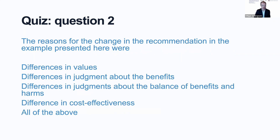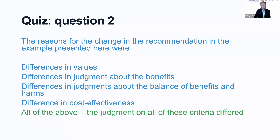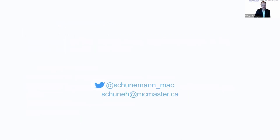Question two: the reason for the change in the recommendation in the example presented here were differences in values, differences in judgments about the benefits, differences in judgments about the balance of benefits and harms, differences in cost-effectiveness, or all of the above? Actually, all of the above. The judgments in this hypothetical example differed on all of these criteria and it led to a different direction of the recommendation. Thank you so much — we'll see you again.